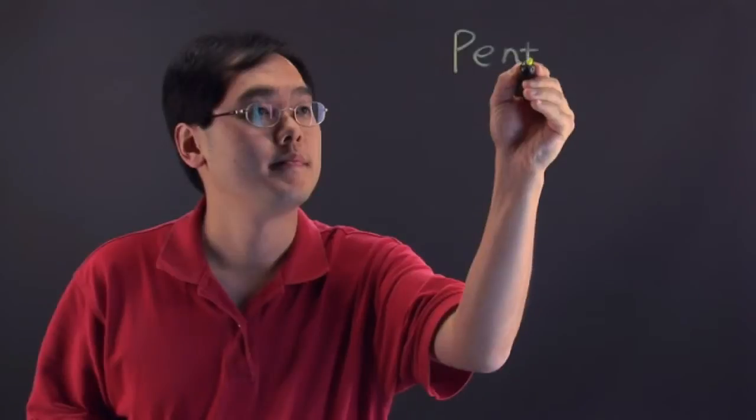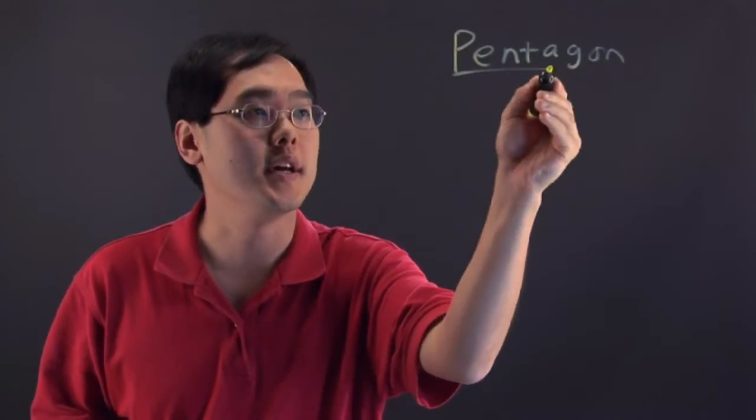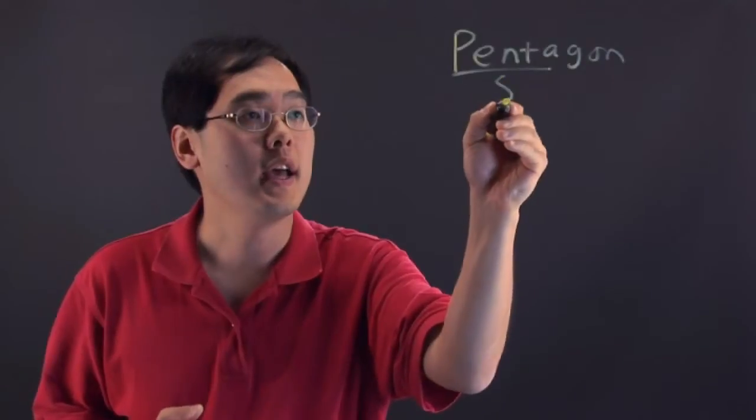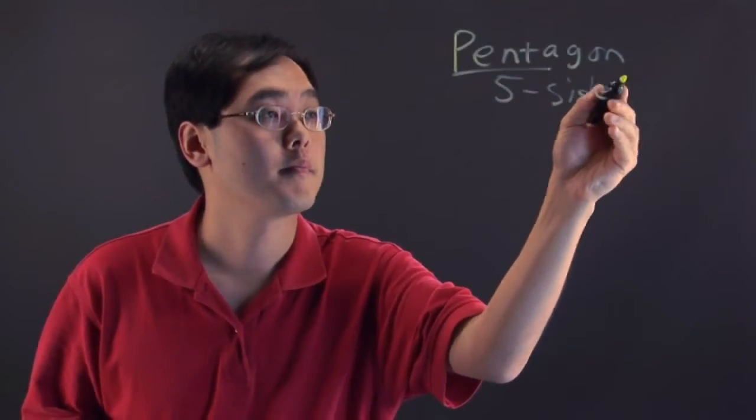With a pentagon, the important thing to look at is the prefix penta. Penta means five, and so a pentagon is a five-sided polygon.